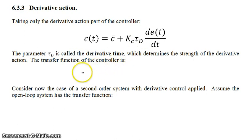Now the transfer function of this controller is the following: gc of s is equal to kc times tau d times s, because the Laplace transform of the time derivative of e of t is s times e of s. We divide through e of s to the other side to get our transfer function.